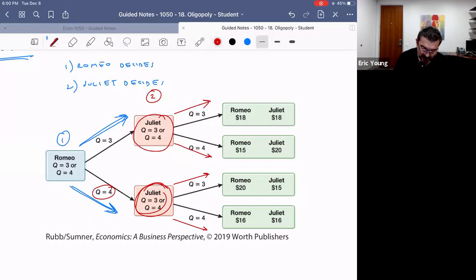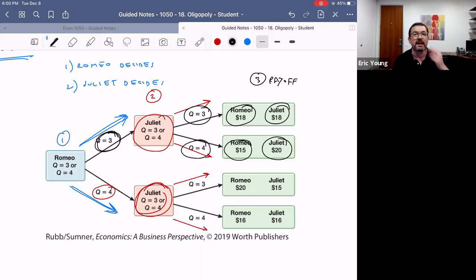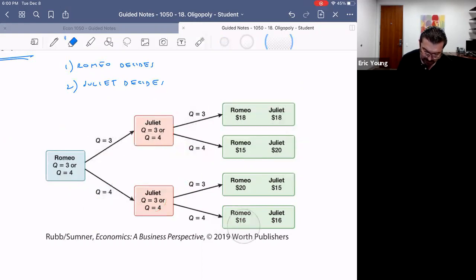Notice here that we have the same payoffs. If Romeo decides to make three and Juliet makes three, then Romeo makes 18 and Juliet makes 18. And if Romeo made three and Juliet made four, then Romeo makes 15 and Juliet 20, and you get the rest of it.